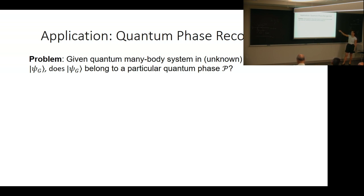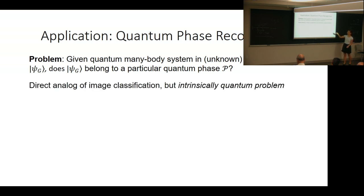the problem asks whether this ground state belongs to phase P. This is a direct analog of image classification, like determining whether an image is a cat or dog, but it's intrinsically quantum because you're classifying quantum states.